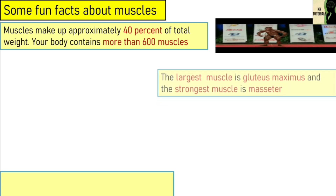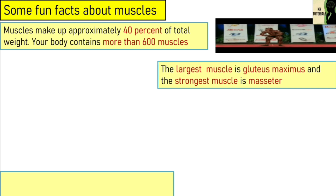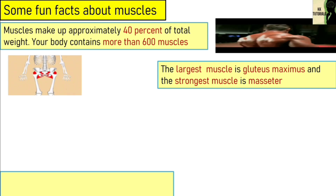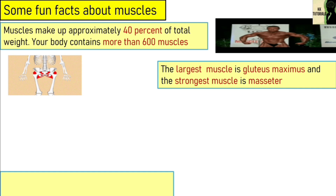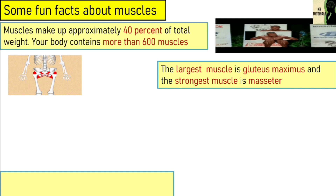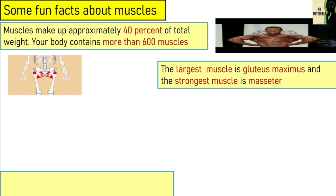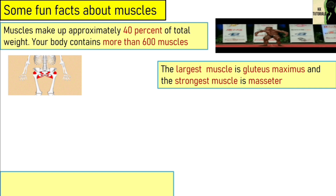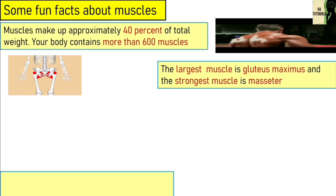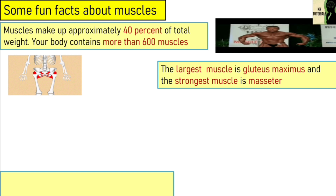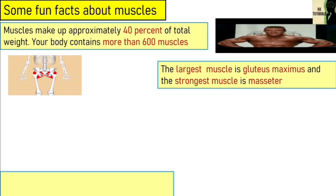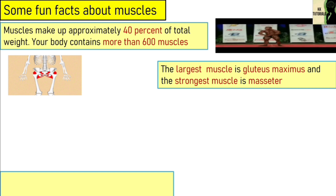The largest muscle is the gluteus maximus — it is the main extensor muscle of the hip, though you may know it as the large muscle in the buttocks. The gluteus maximus is the main muscle used to help you walk upstairs. The strongest muscle is the masseter — it's a muscle in your jaw that can close your teeth with a force as great as 200 pounds.